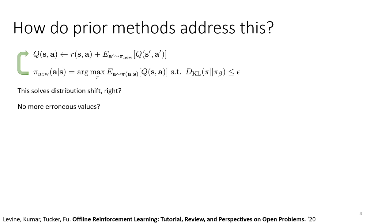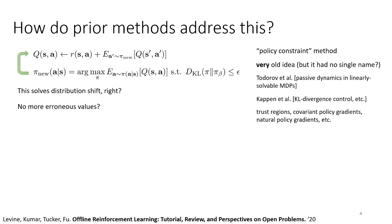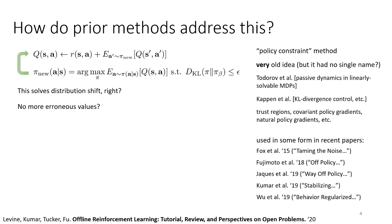While policy constraint methods provide good tools for analysis and a reasonable basis to start with, generally the best-performing current methods do something more sophisticated — naively implemented policy constraint methods don't actually work all that well. This is a very old idea that comes up in work by Emmanuel Totoro from the early 2000s, Bert Kappen, trust regions, covariant policy gradients, natural policy gradients, and recent papers from Fox et al., Fujimoto, Jax, Kumar, Wu, and many others.